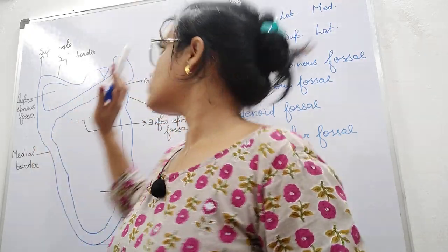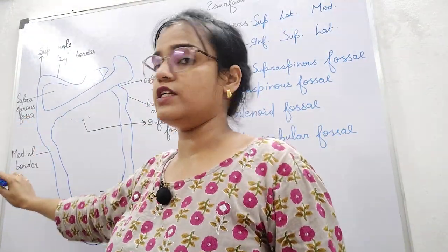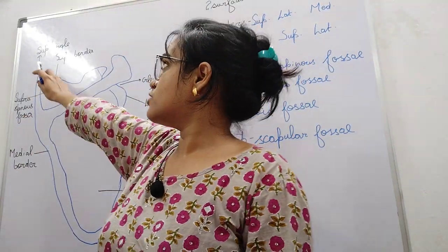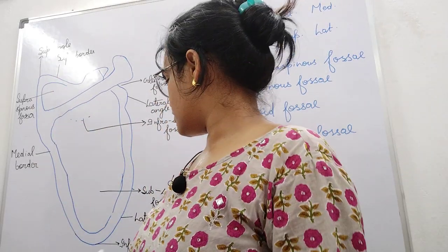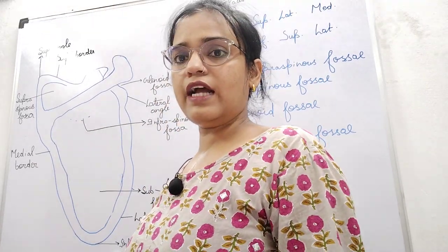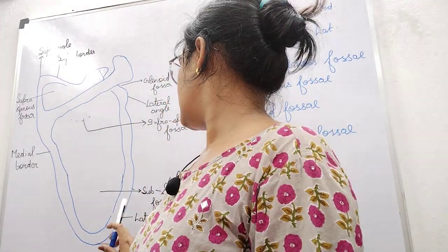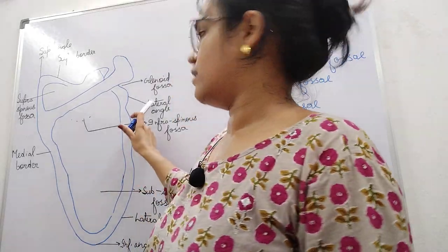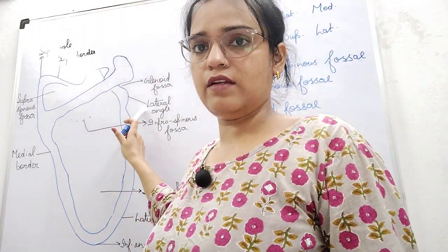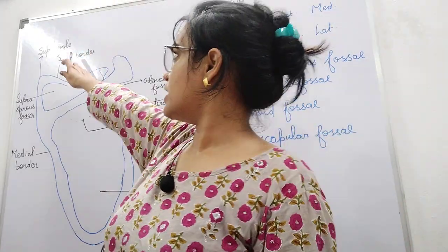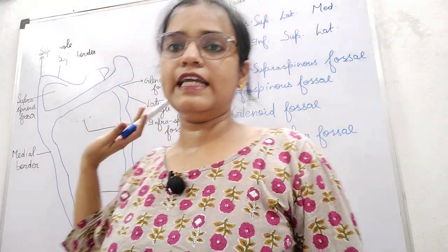Now coming to the angles. We can locate them here. This is the superior angle, this is the inferior angle, and this is the lateral angle. So superior, inferior and lateral — easy to identify.